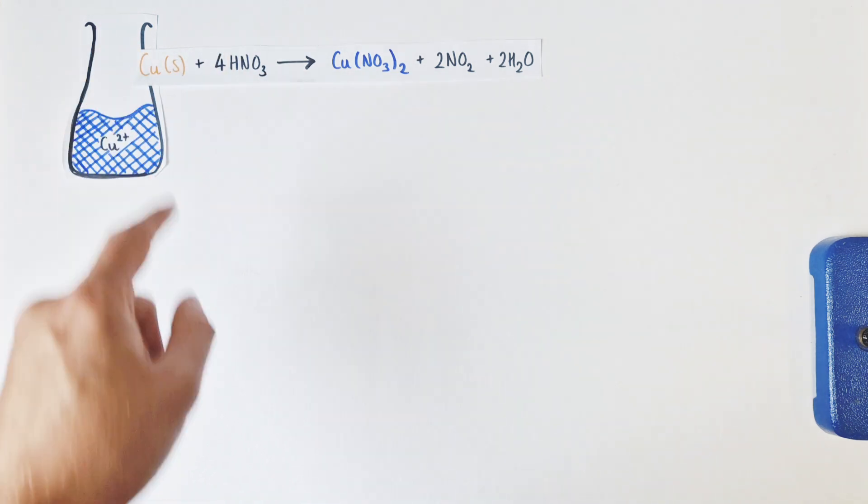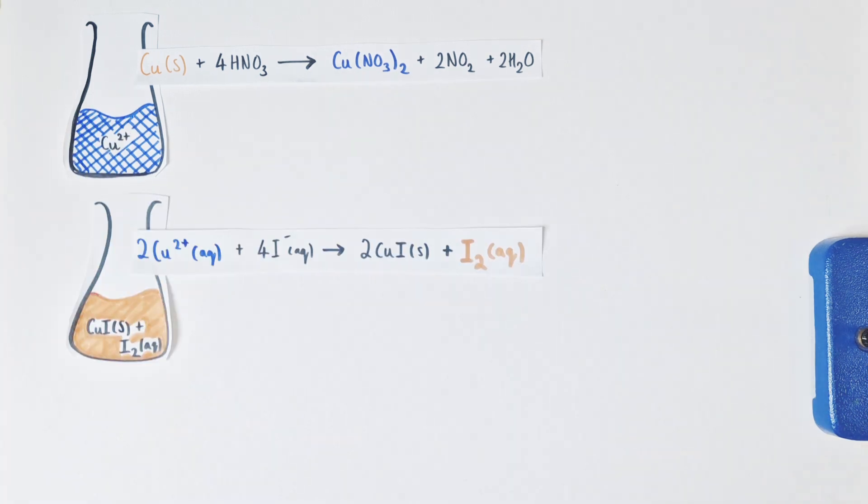We need this reaction to work out the mass of copper later on in our calculation. Now those 25 centimeter cubed samples of copper 2+ ions were being reacted with excess potassium iodide bringing iodide ions and the reaction taking place between those two ions is producing copper iodide which is the white precipitate and iodine as well. And that's this murky brown suspension we've got in the conical flask here. So this is the second reaction taking place and the key point is we're now making iodine with this second reaction.